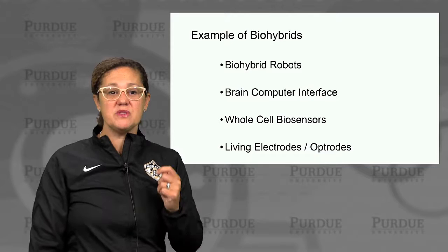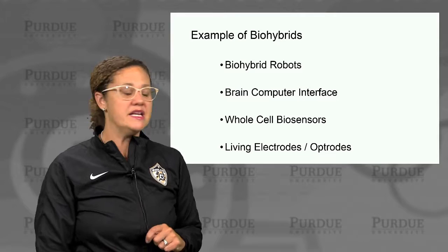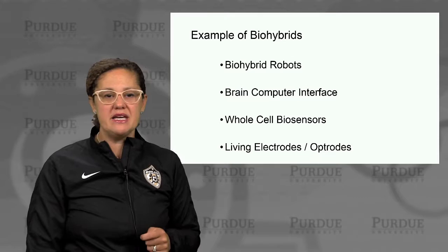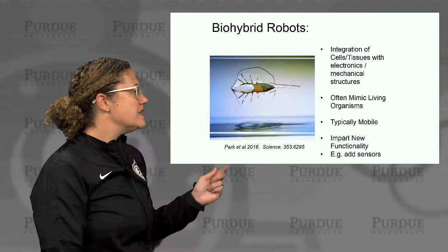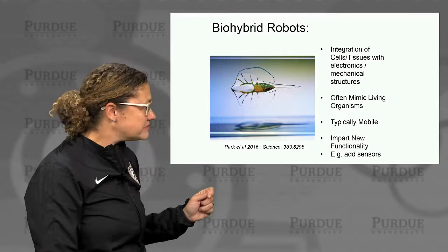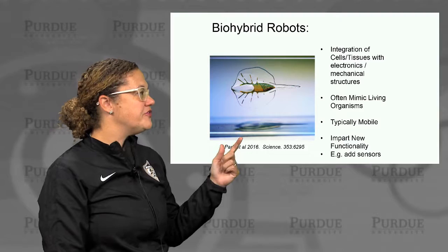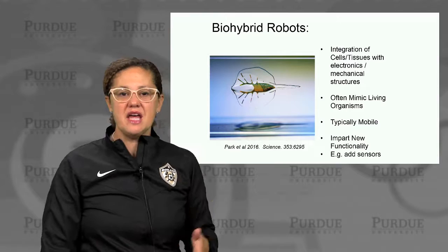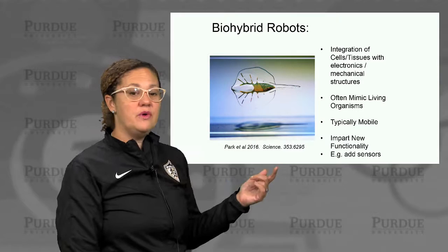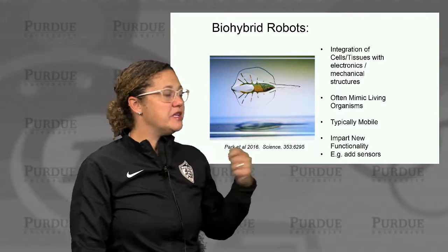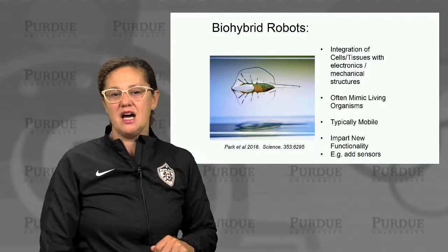Let's look at specific examples of bio-hybrid devices people are working on right now, including bio-hybrid robots, brain-computer interface, neural implants, whole cell biosensors, and living electrodes and optrodes. For bio-hybrid robots, here's an example published in Science: a bio-hybrid robot of living cells integrated into an artificial ray. Bio-hybrid robots typically integrate cells and tissues with electronics and mechanical structures, often mimicking living organisms. They're typically mobile and impart new functionality — for example, adding sensors to a robotic ray.